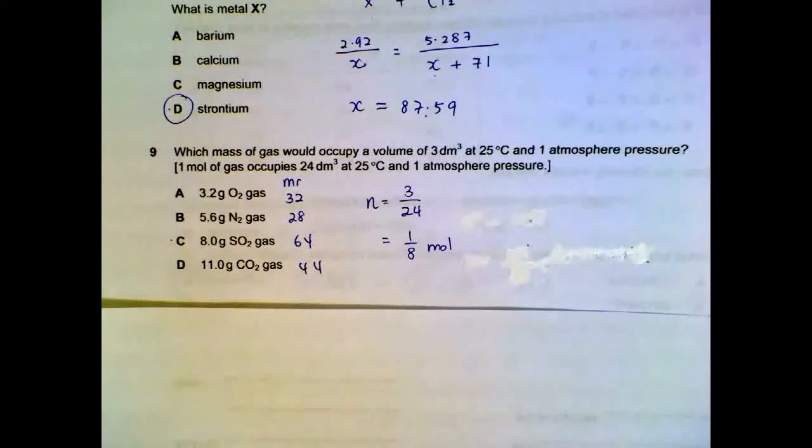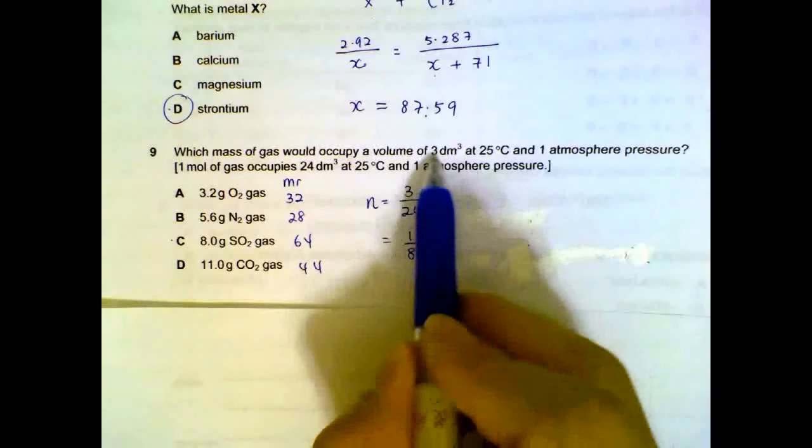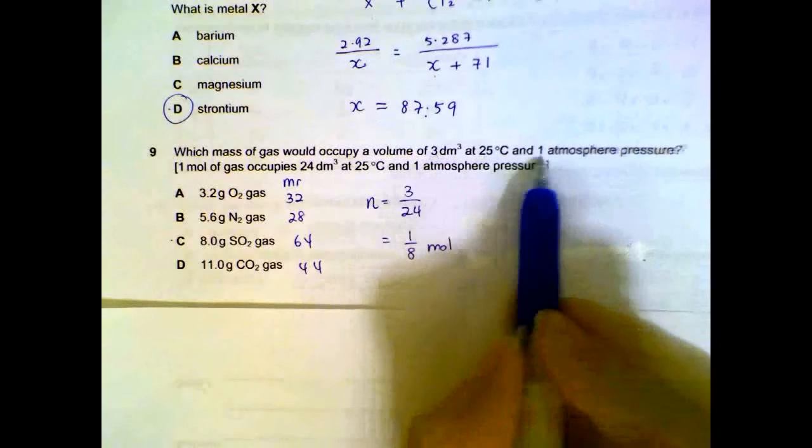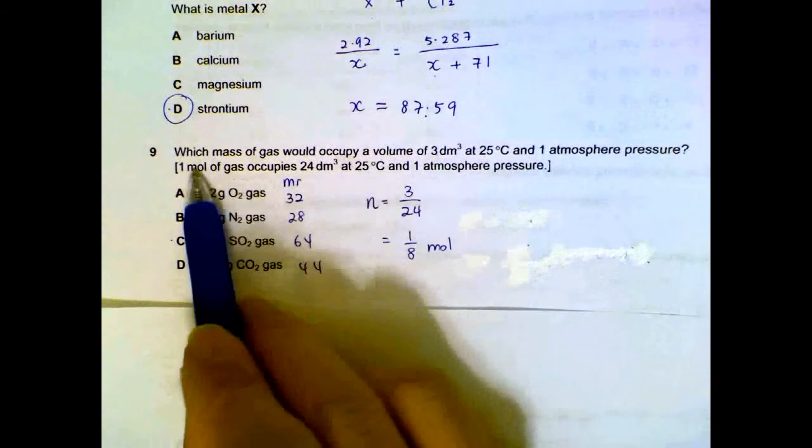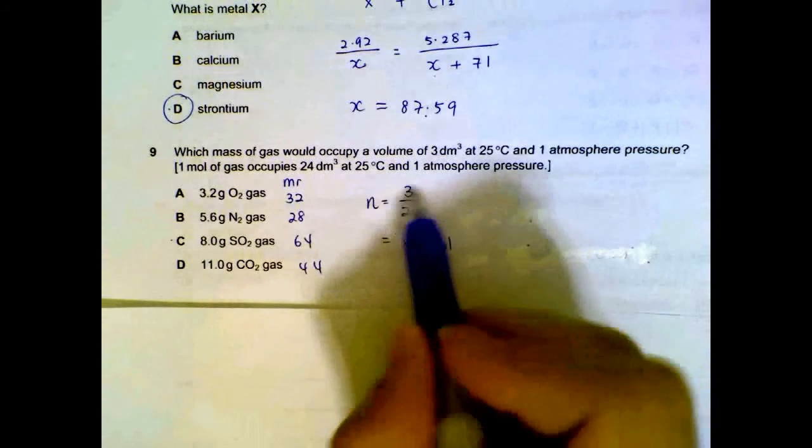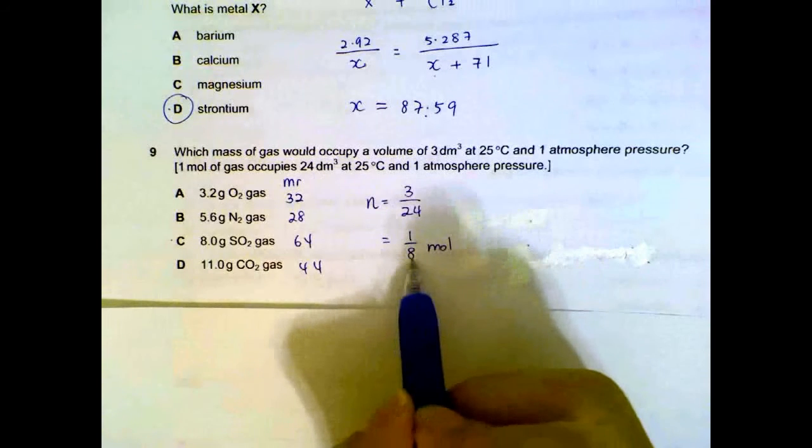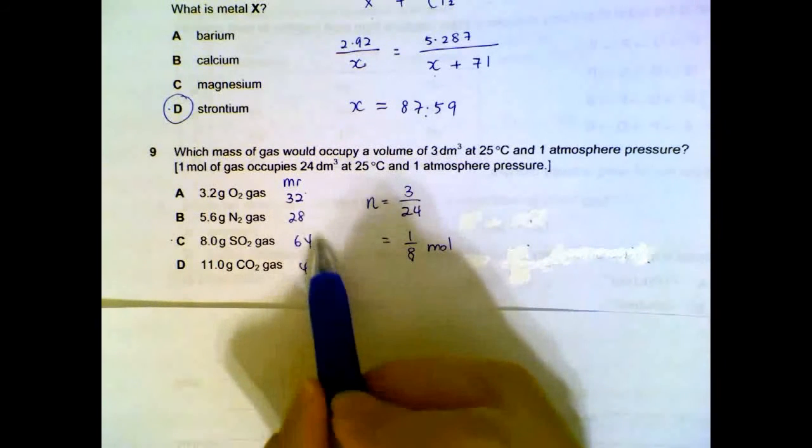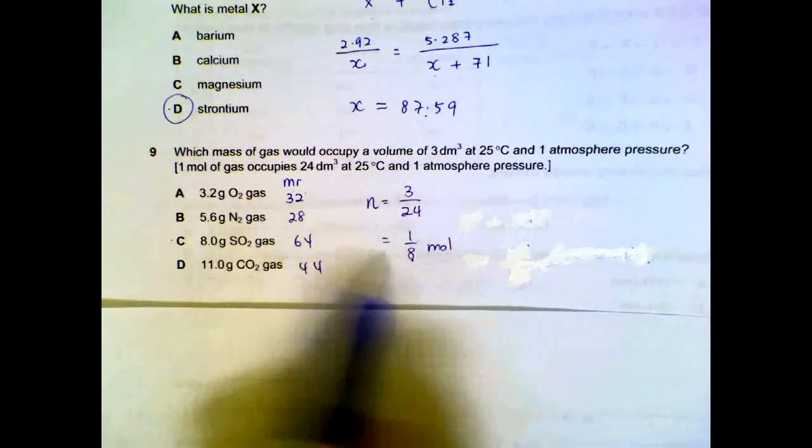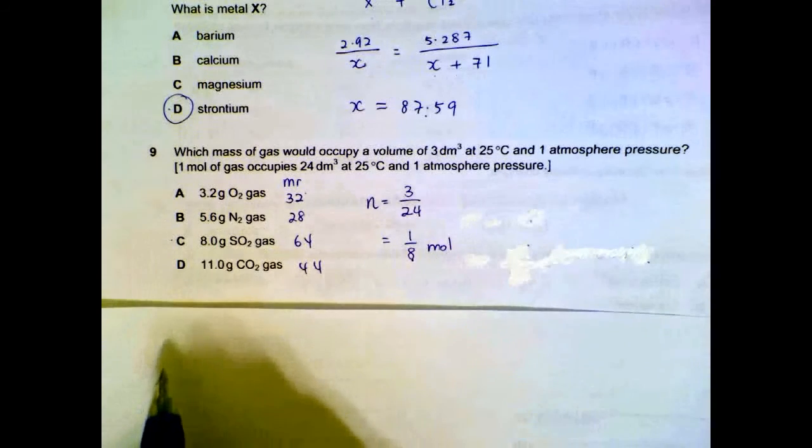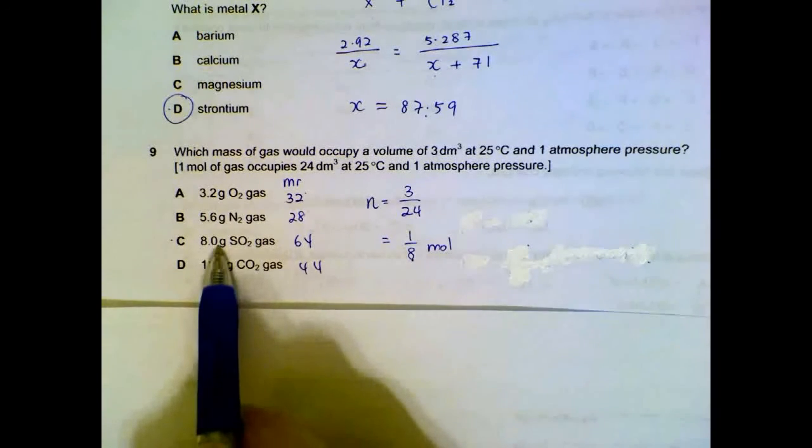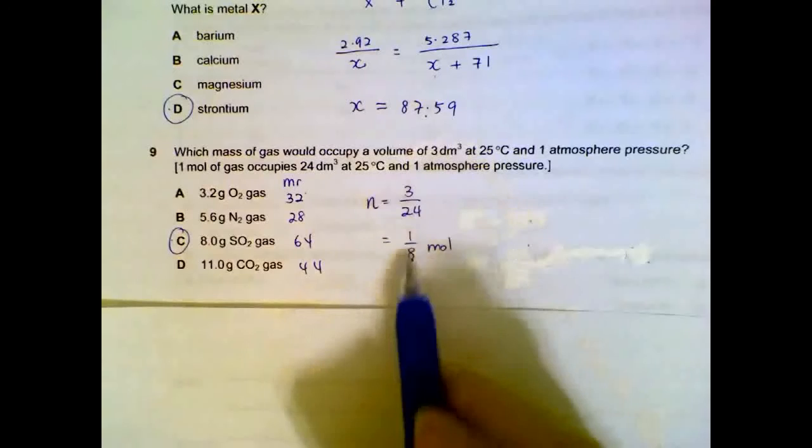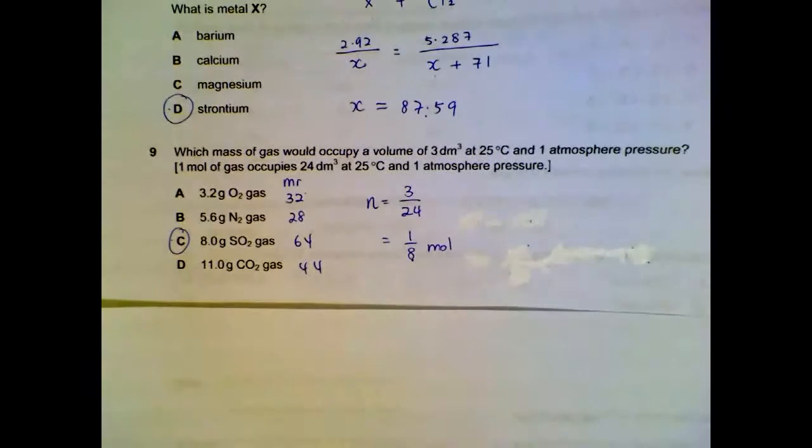Number 9. We have a gas that has a volume of 3 dm³ under room temperature pressure. So we convert the 3 dm³ to number of moles, because 1 mole will occupy 24 dm³. So number of moles we have will be 1 over 8 moles of gas. Once we have the moles of gas, we multiply by the respective MR of the gases, and then we see which one will give us the correct mass. In this case, 1 over 8 moles times MR of 64 will give us 8 grams of sulfur dioxide.